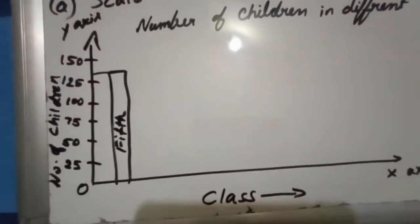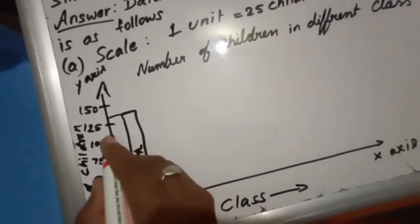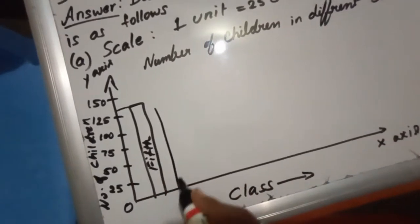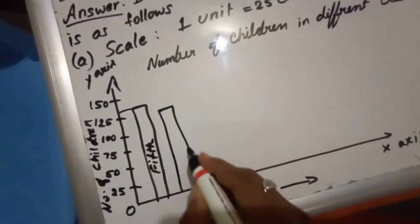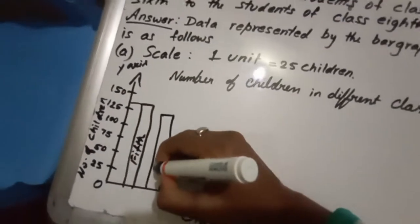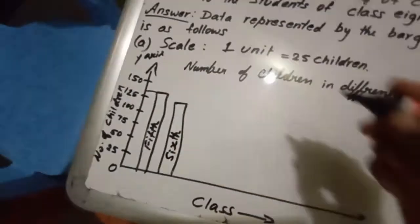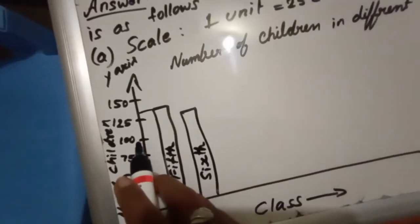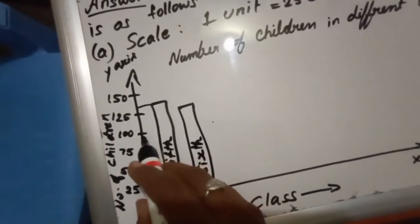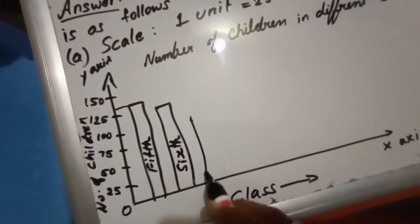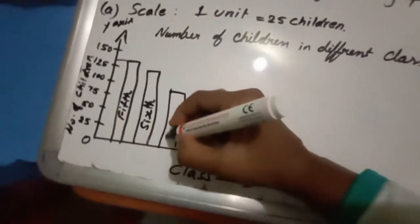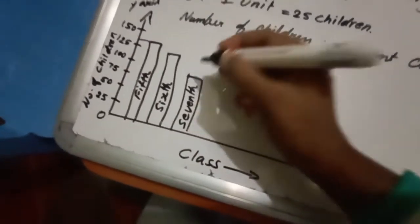The next one is 6th. 6th will be 120. So it should be below 125. So I am choosing here 120. This is which class? 6th. The next one 7th, 7th is 95. It should be below 100. So I will choose from here to here, which class it is? 7th. So you can write S-E-V-E-N-T-H, 7th.